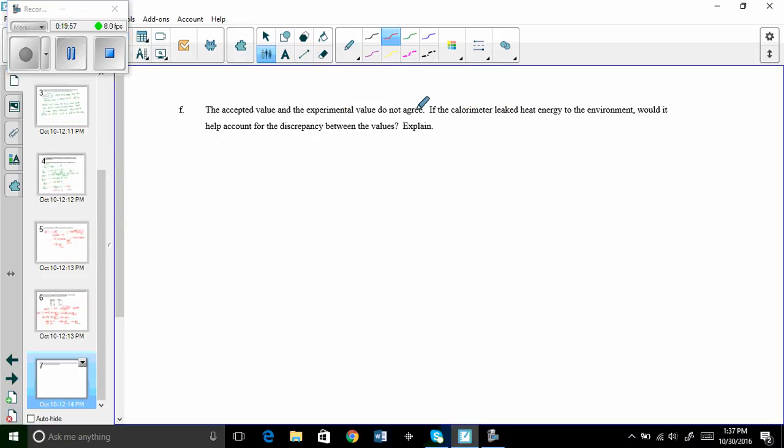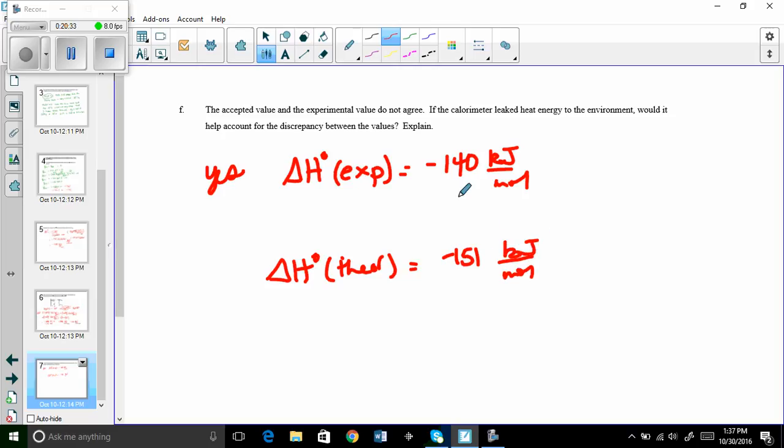And then finally, the last question: the accepted value and the experimental value do not agree. If the calorimeter leaked energy to the environment, would it help account for the discrepancy between the values? And the answer is yes. Here's why. When you did delta H not for the experiment, you got negative 140. And when you got delta H not from the tables, which is the theoretical, you got negative 151. Now ignoring the sign, because remember how this comes up to the other side? Well this is smaller than it should have been because remember Q reaction.